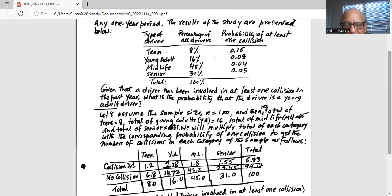And the no collision will be the complement event. So if 0.15 for teen is the collision, at least one collision, so 0.85 will be the complement event of no collision.